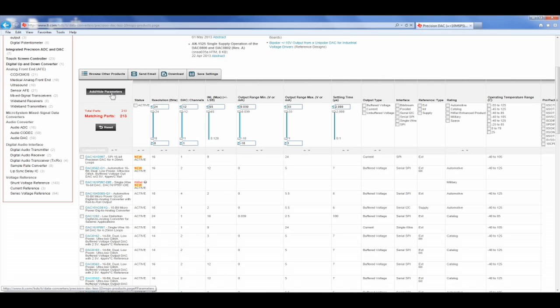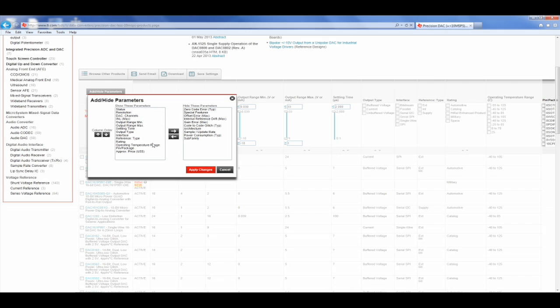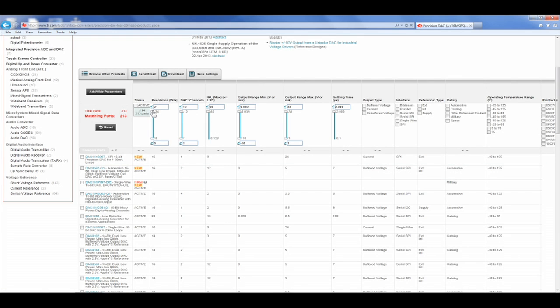If we click the Add or Hide Parameters button, we can add even more parameters, such as zero code error, offset error, and architecture. So for a quick example, let's say we're looking for a 16-bit two-channel DAC.